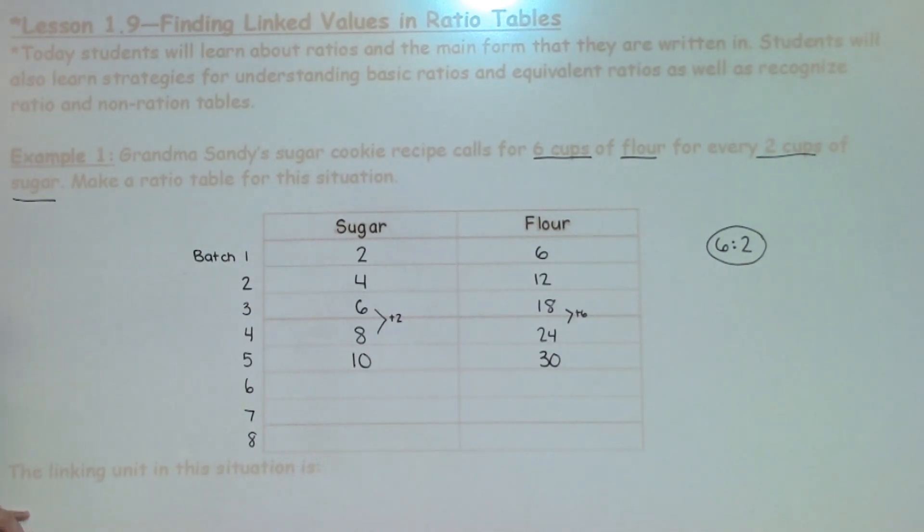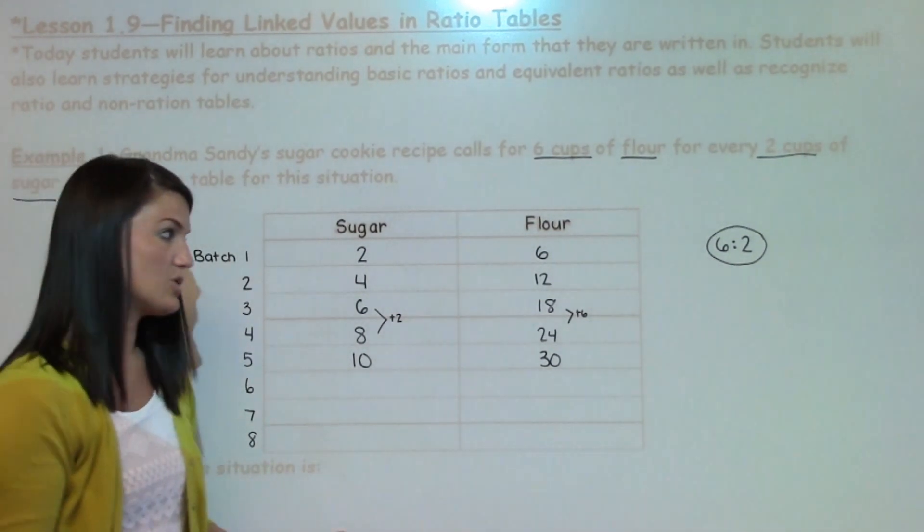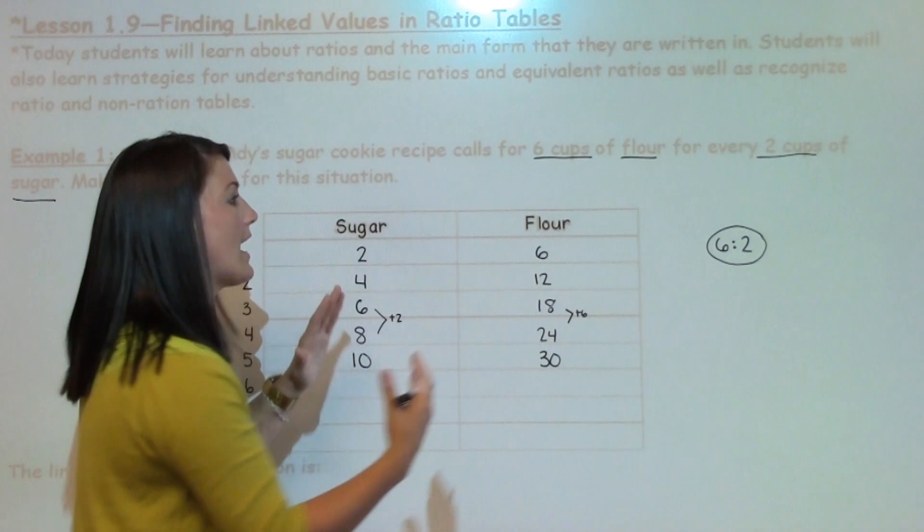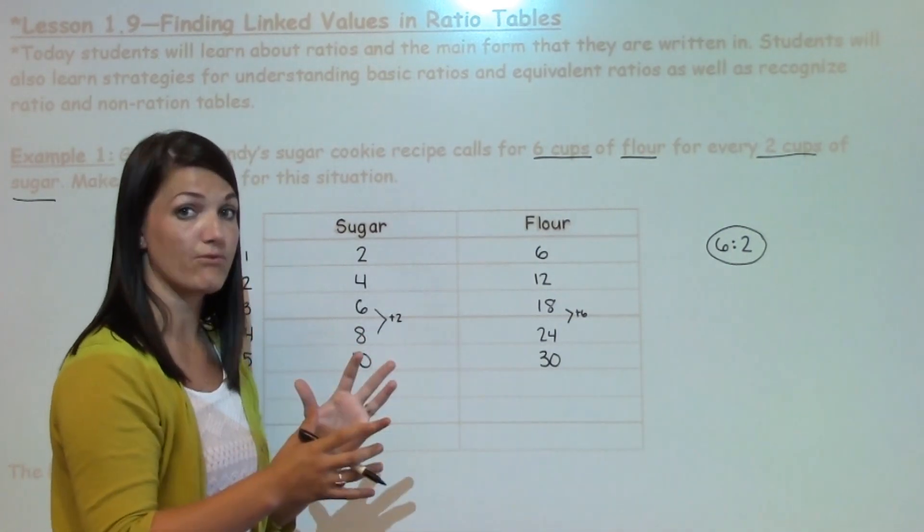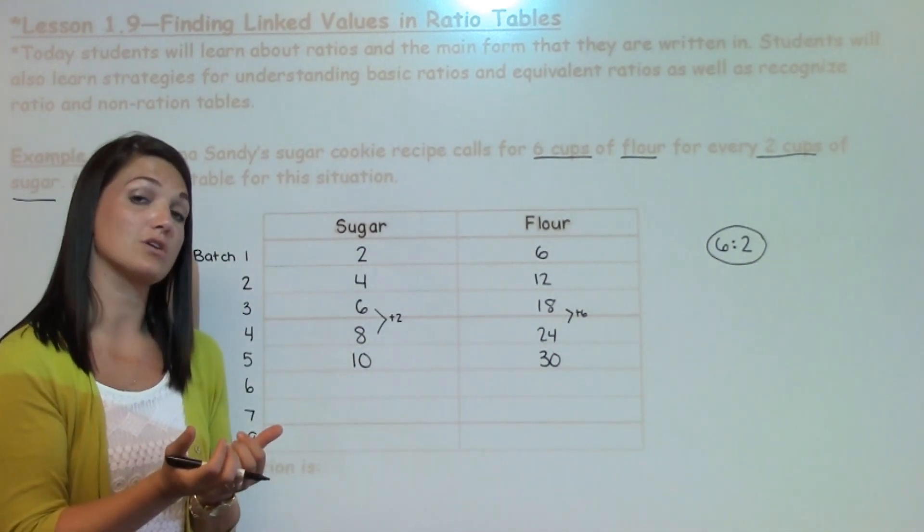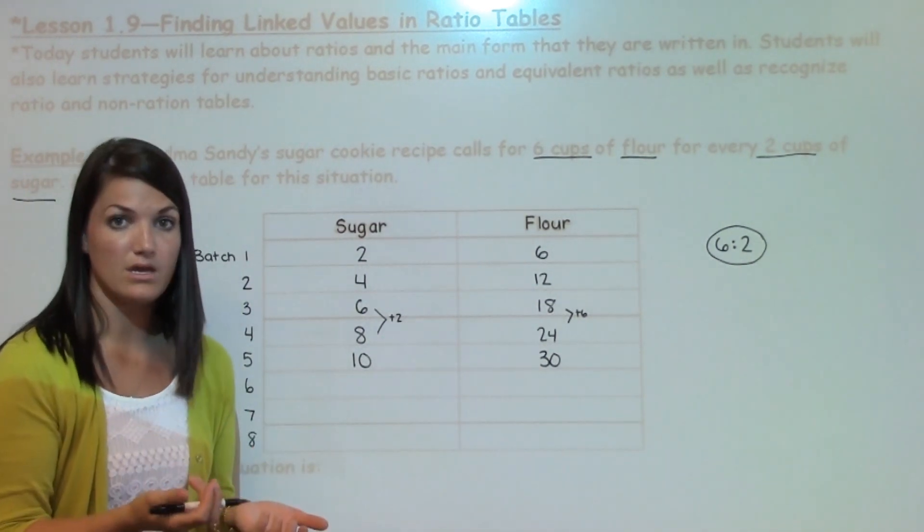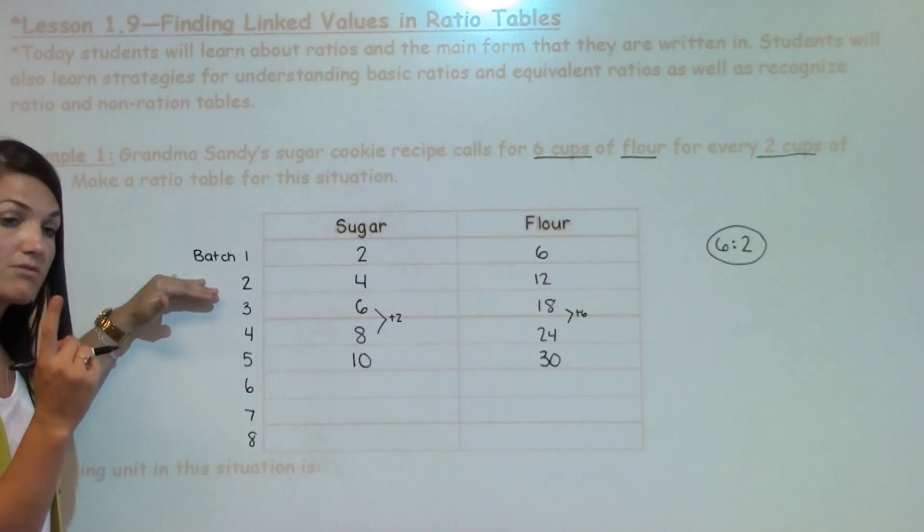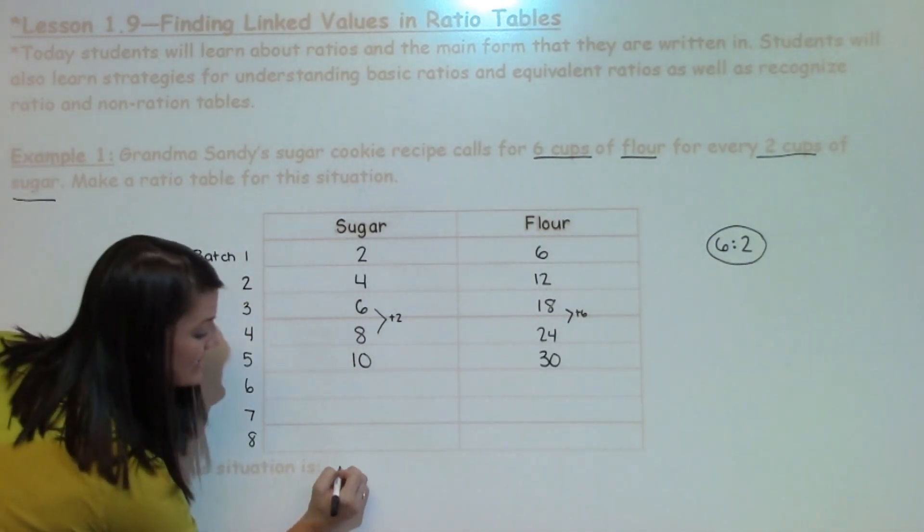Another thing that students looked at today was what is the linking unit in this situation. I have sugar, I have flour, their amounts are different, which is why they're a ratio. But what connects them all together? When I put sugar and flour together, what does it make? It makes one batch of cookies. So our linking unit is batches.